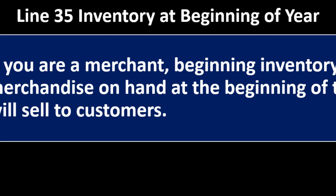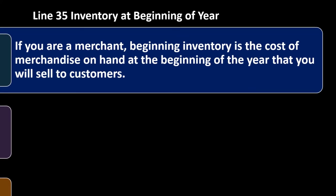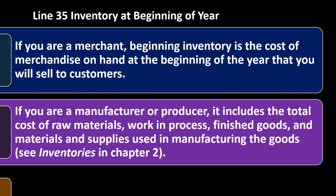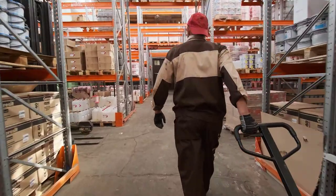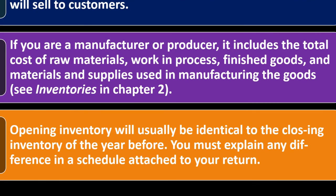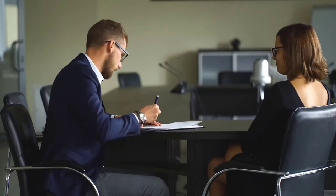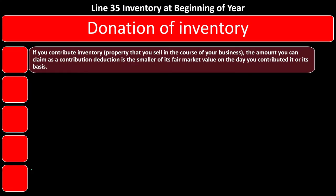Line 35, inventory at the beginning of the year: if you are a merchant, beginning inventory is the cost of merchandise on hand at the start of the year that you will sell to customers. If you are a manufacturer or producer, it includes the total cost of raw materials, work in process, finished goods, and materials and supplies used in manufacturing. Opening inventory will usually be identical to the closing inventory of the prior year; if it's not, the IRS will question it, so explain any difference in a schedule attached to your return.